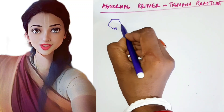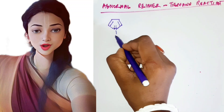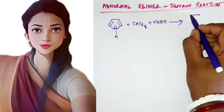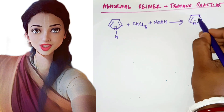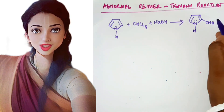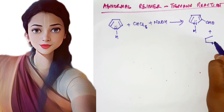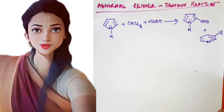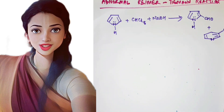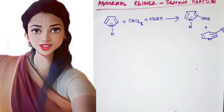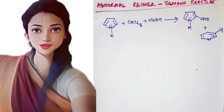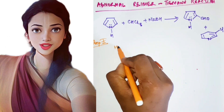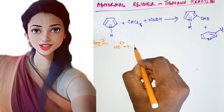Hello everyone, welcome to the institute. Today in this video we are going to talk about the abnormal Reimer-Tiemann reaction. The normal Reimer-Tiemann reaction happens in the presence of an aromatic compound, but here we also have an aromatic compound that is heterocyclic. Heterocyclic means a compound which contains any element other than carbon. This compound has an aromatic group following 4n+2 Hückel's rule — this is pyrrole. Along with thiophene, we will show the abnormal Reimer-Tiemann reaction.